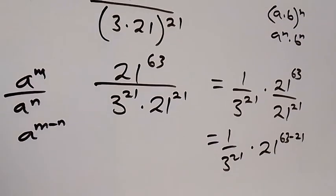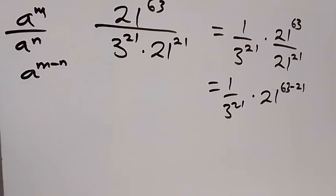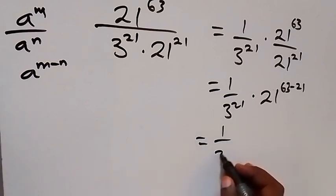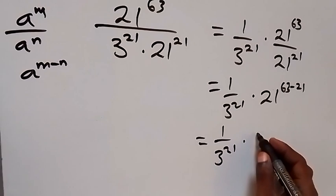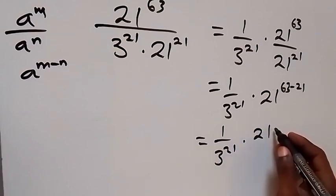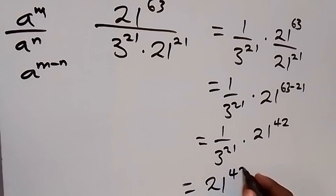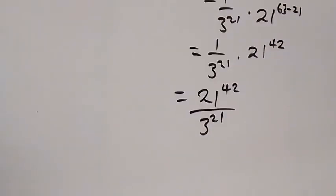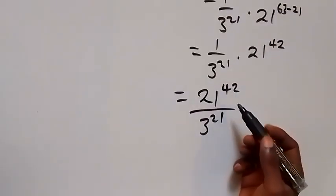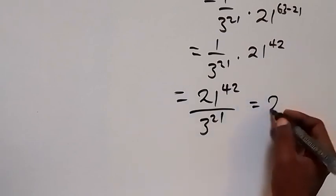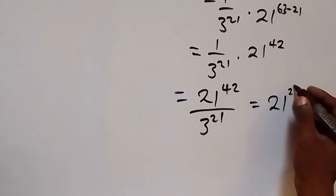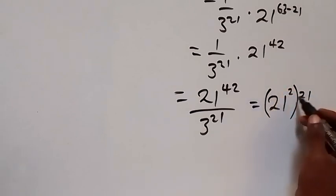From here, we write this again and it becomes 1 over 3 raised to power 21, then multiply by 21 raised to power 42. We can also factor 21 out, and it becomes 21 raised to power 2, then raised to power 21, because 21 times 2 is 42.